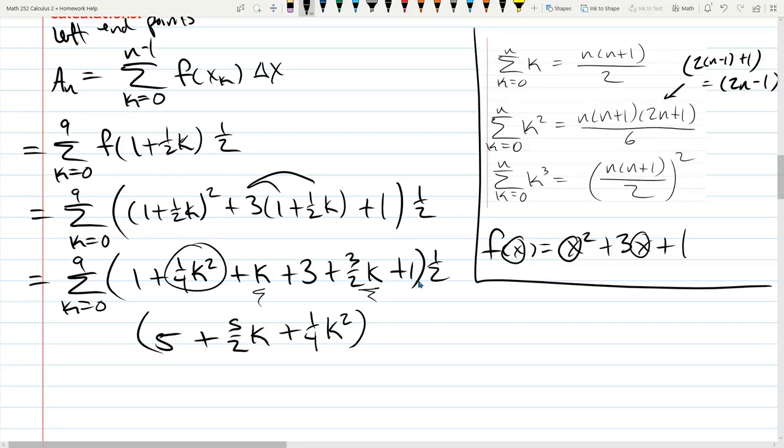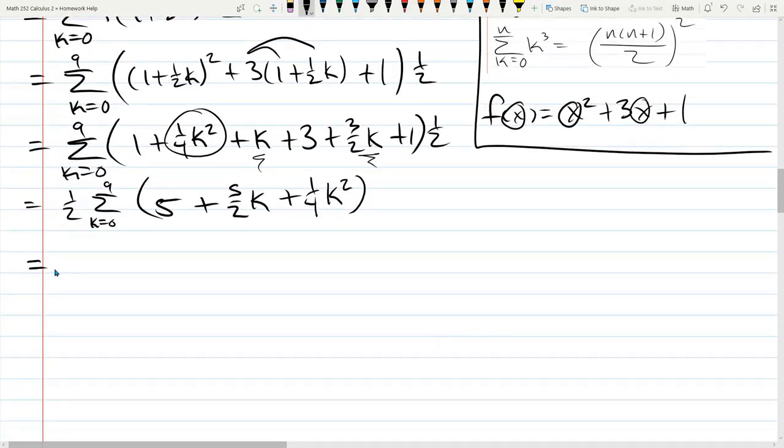Now distributing the 1 half into what I just wrote down is not going to make things better. It's only going to make it a little uglier. So what I'm going to do instead is just shift it out to the front, factor it out. You're basically ready to apply the formulas. We're just going to split over the sums here. So the whole thing is multiplied by 1 half. So we can write it as a half summation. These are all K equals 0 to 9. So 1 half summation 5 halves K plus 1 half summation 1 fourth K squared.